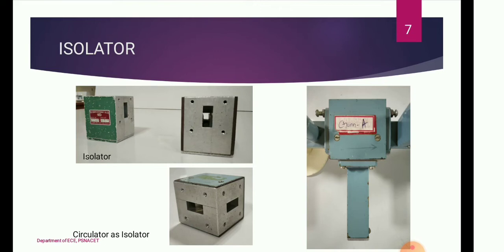Next to the Gun Diode Oscillator is the isolator component. The isolator is a two-port, non-reciprocal device which produces minimum attenuation in one direction of wave propagation and very high attenuation in the opposite direction. When inserted between a signal source and a load, almost all signal power is transmitted to the load and any reflected power from the load is not fed back to the generator output. A circulator can also be used as an isolator.